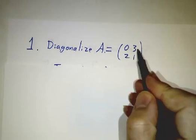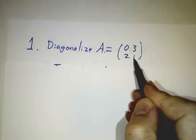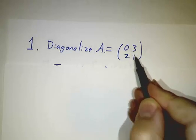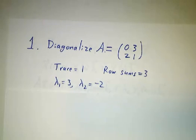The rows add up to 3. 0 plus 3 is 3, 2 plus 1 is 3, so 3 must be an eigenvalue. And the trace is 1, so the eigenvalues add up to 1. And that means the eigenvalues have to be 3 and negative 2.